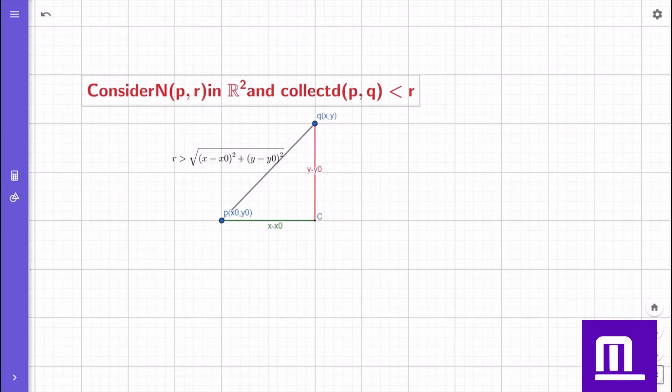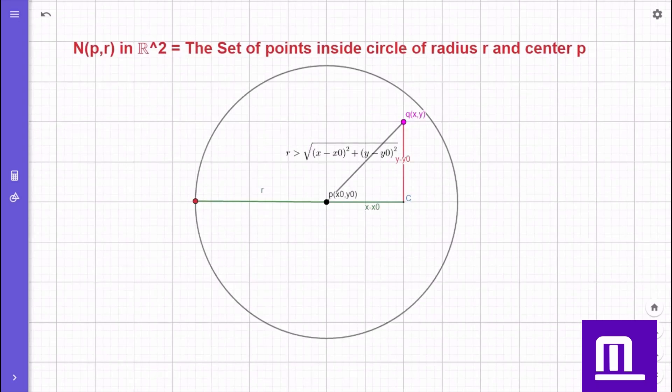Then, how to find those points? Yes, we can use the distance formula. That is, the square root of x minus x not square plus y minus y not square is less than r. This suggests that all points inside the circle of radius r and center p are points of n of p comma r, that is, the neighborhood of point P of radius r.